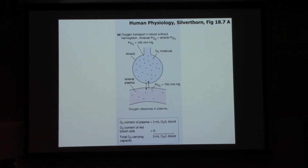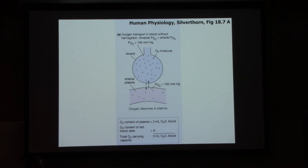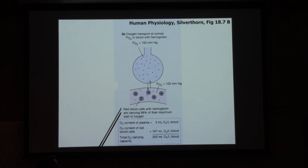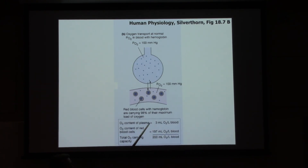Let's look at the importance of having hemoglobin. If we don't have hemoglobin and just carry oxygen dissolved in blood plasma, at 100 mmHg partial pressure of oxygen we'd have about 3 milliliters of oxygen per liter of blood. If we add hemoglobin, we can carry a lot more. About 98% of the oxygen we carry is bound to hemoglobin. With oxygen bound to hemoglobin, we can carry 197 milliliters of oxygen per liter of blood - for a total of 200 milliliters of oxygen per liter. That's a lot more than just relying on dissolved oxygen.